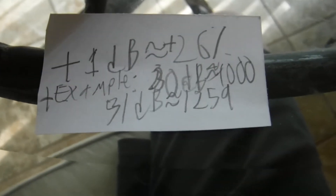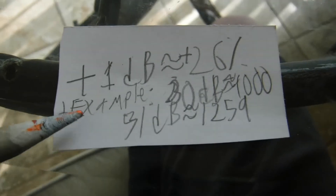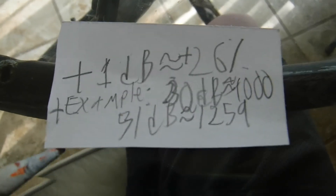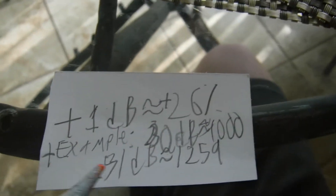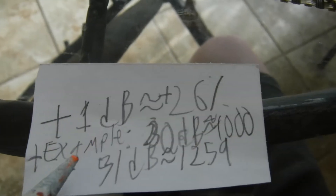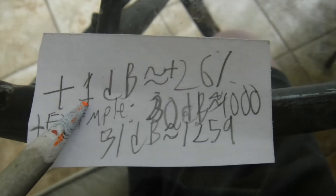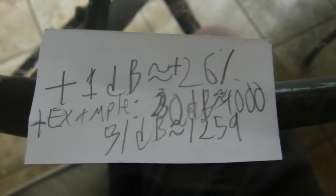Let's start out simple. For every time we add 1 decibel, we are increasing the volume by 26%, so it's exponentially more increase as we go up. Going from 2 decibels to 3 decibels — 3 decibels is actually close to multiplying by 2.